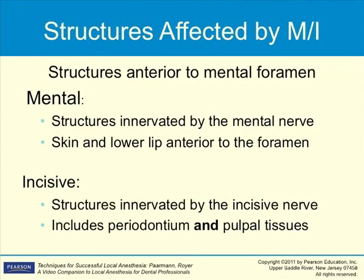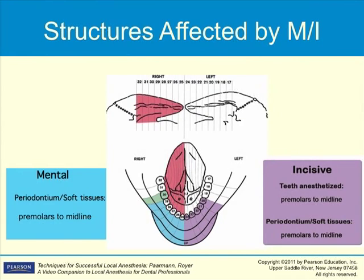The mental and incisive injections will be demonstrated as one injection, since clinically both nerves can be anesthetized with one injection. However, remember that they do anesthetize two separate nerves and areas. The mental injection anesthetizes soft tissue only — the facial gingiva and vestibular mucosa from the mental foramen through the midline, the skin of the chin, and the lower lip. The incisive injection anesthetizes the hard tissues or pulpal tissues, the periodontal ligaments, and pulpal and osseous tissues from the mental foramen through the midline in one quadrant.